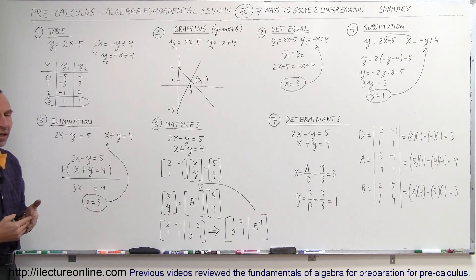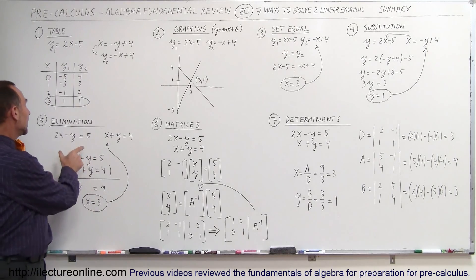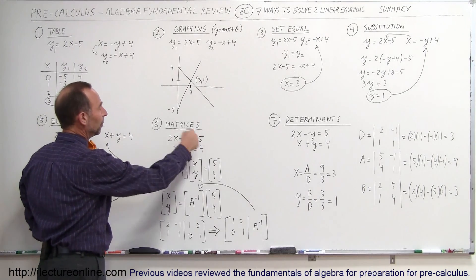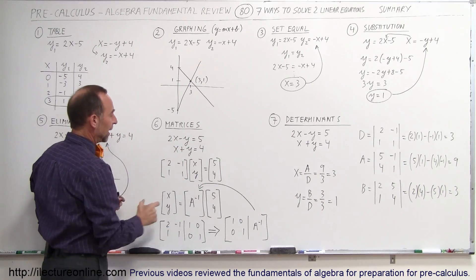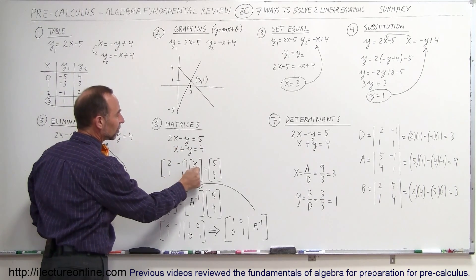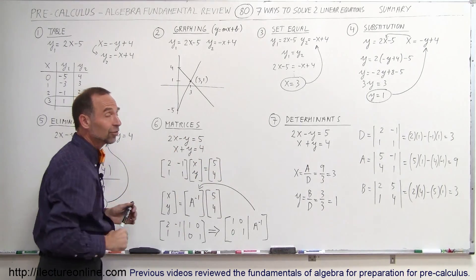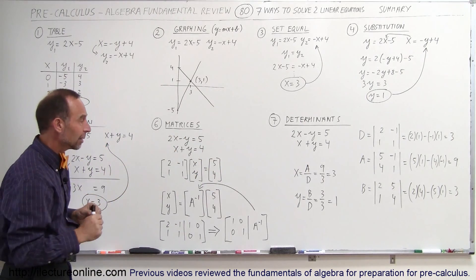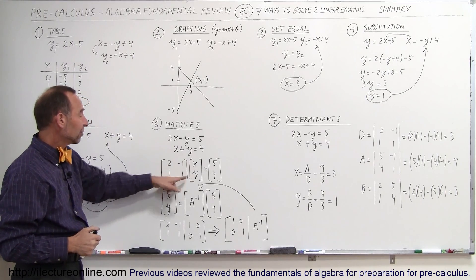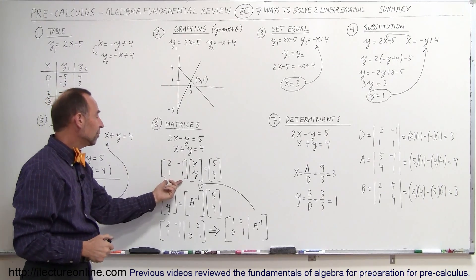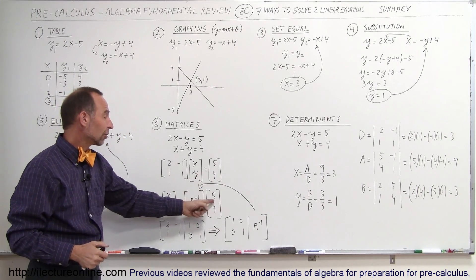The sixth method is called the matrix method, or using matrices. Just like you did here, you have to write the equation in this form. Notice, you can write these two equations in a matrix format. This matrix times this matrix equals this matrix, which is the exact same as writing these two equations out like that. It's exactly the same thing, but it's in matrix format, which means that you can solve for x and y by then moving this matrix to the right side, making it the inverse of the matrix, times that matrix.